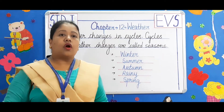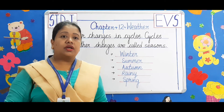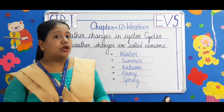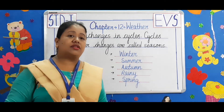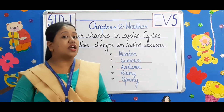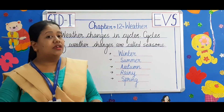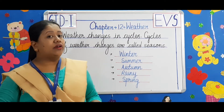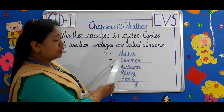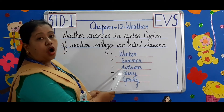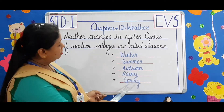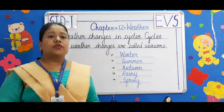Children, always remember: the condition of the air around us is called weather. There are five different seasons — winter season, summer season, autumn season, rainy season, and spring season.